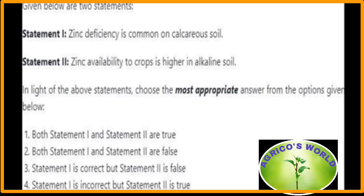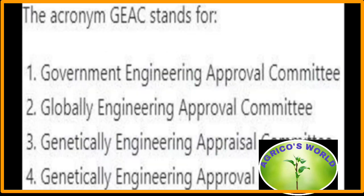Given below are two statements. Statement 1: zinc deficiency is common on calcareous soils — yes, zinc deficiency is common in calcareous soils, so statement 1 is correct. Statement 2: zinc availability to crops is higher in alkaline soils — no, zinc availability is not higher in alkaline soils, so statement 2 is false. The most appropriate answer is: statement 1 is correct but statement 2 is false. The acronym GEAC stands for Genetic Engineering Approval Committee.